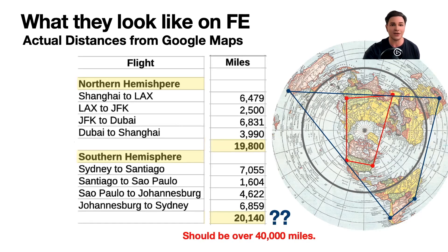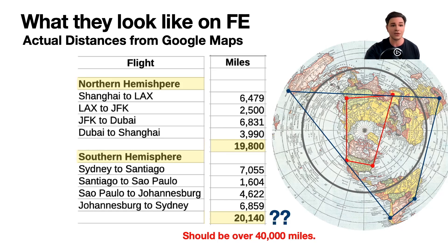Let's attach actual miles to these flights. The Northern Hemisphere flights — Shanghai to LA is about 6,500 miles, and all the way to Dubai and back to Shanghai is about 4,000 miles. You can use Google Maps to prove this; these are actual mileage distances between cities. The top round-the-world trip is about 19,800 miles, and the bottom round-the-world trip is about 20,000 miles. They're roughly identical in length and travel distance. But looking at the flat Earth map, there's no way the red inner lines and the outer blue lines both equal almost 20,000 miles — that's impossible.